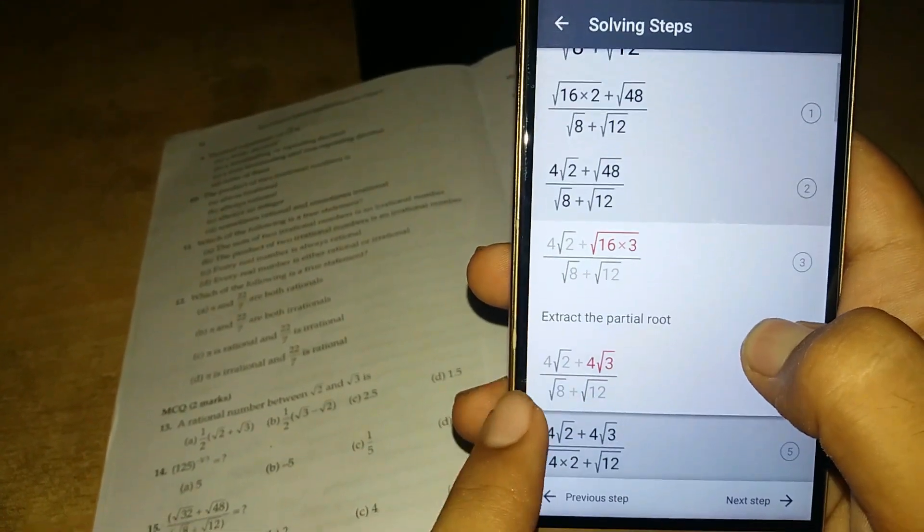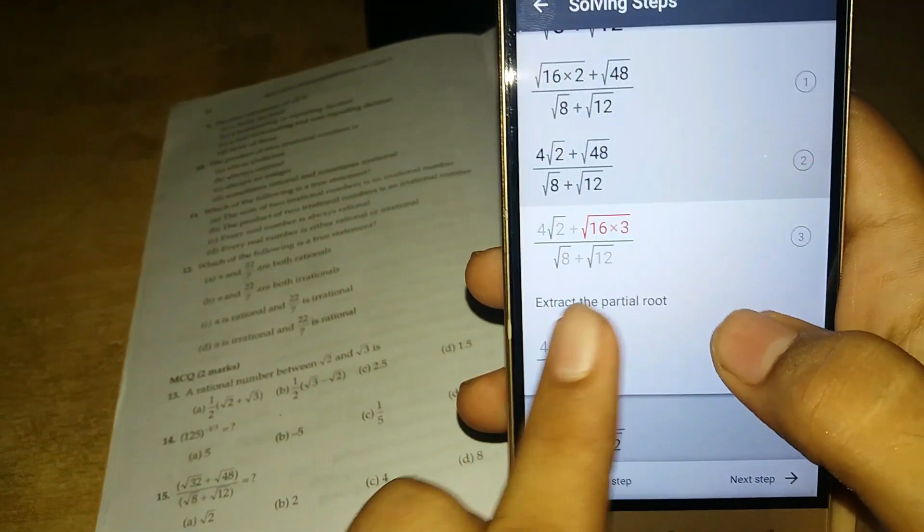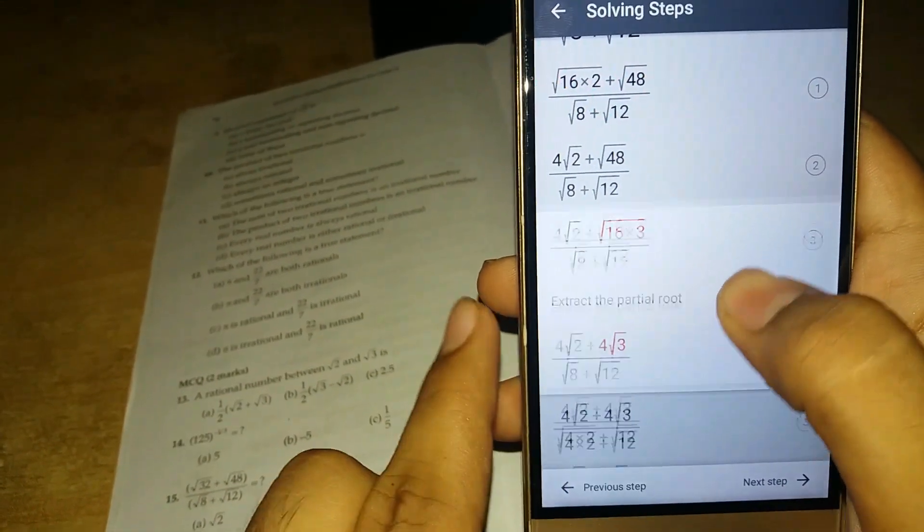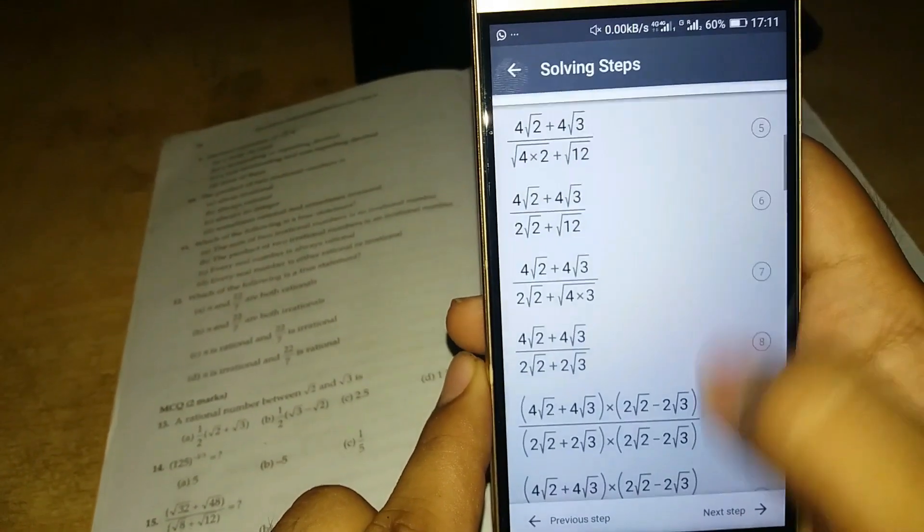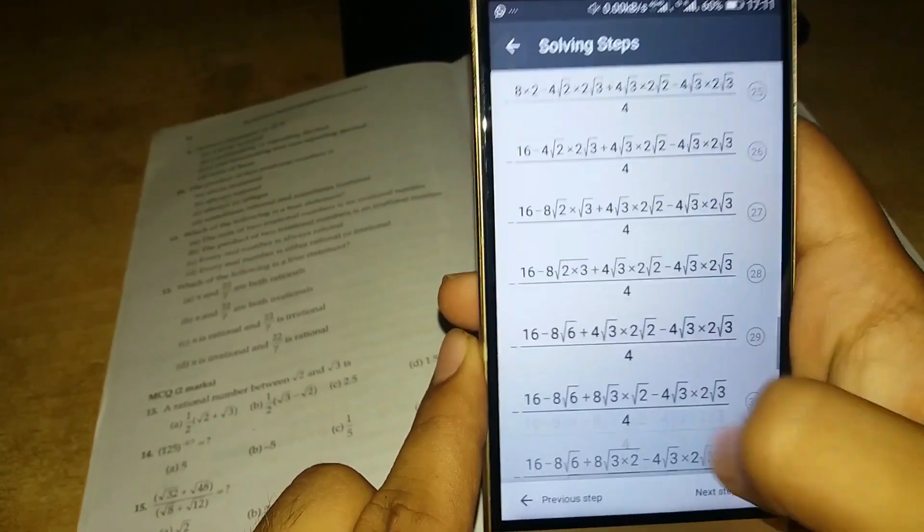Look here, extract the partial root. You can see here 16 into 3, 4 has been taken out from under root. This is how it solves the equation.